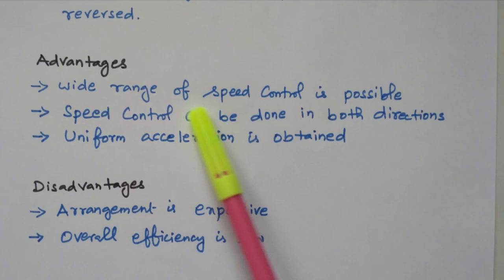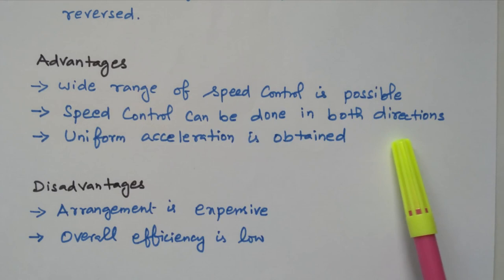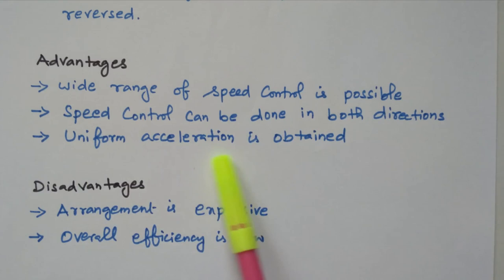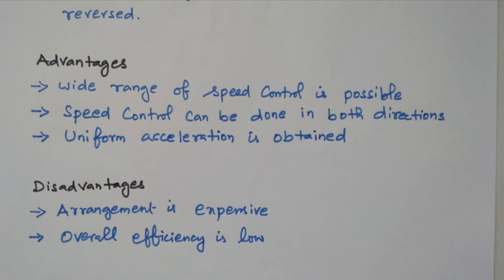Advantages of the Ward-Leonard system: wide range of speed control is possible from minimum to maximum speed. Speed control can be done in both directions — reversing the direction of the motor is also possible. Uniform acceleration is obtained because all three machines are coupled together with the same rating. Disadvantages: the arrangement is expensive — to control one motor, two additional machines are needed. Overall efficiency is low because we need to run one motor and one generator just to control motor M1, making it less efficient and more expensive.